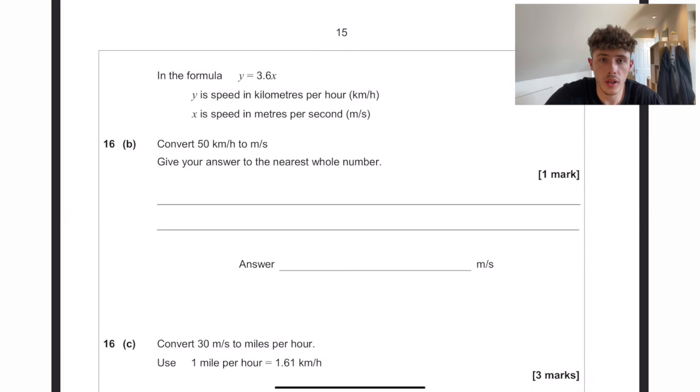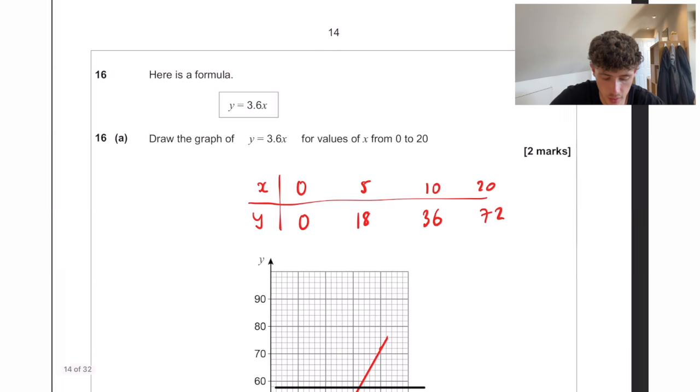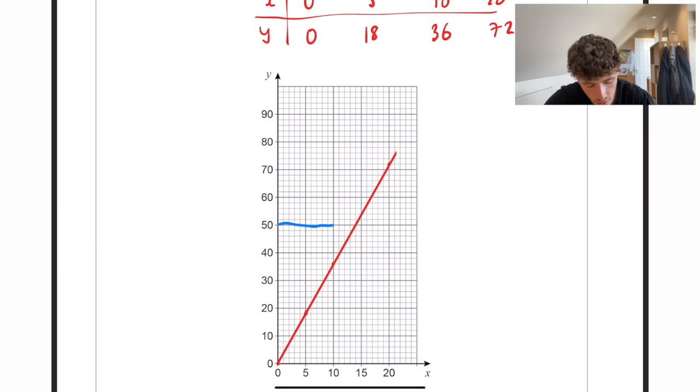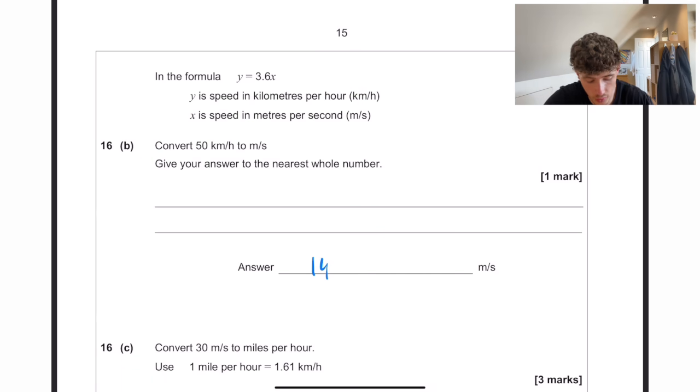So in the formula y equals 3.6x, y is the speed in kilometres per hour, and x is the speed in metres per second. We want to convert 50 kilometres per hour to metres per second. So if we just find 50 on here, and then go down, you can see that goes to roughly 14, or exactly 14. Alternatively, we could do 50 equals 3.6x. So x, if we divide it underneath, which gets approximately 14 to the nearest whole number anyway.